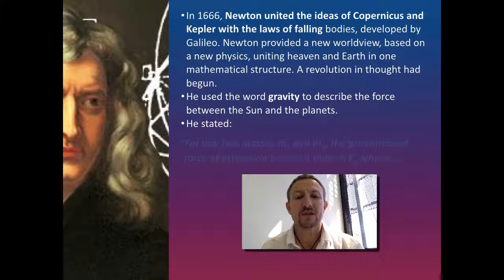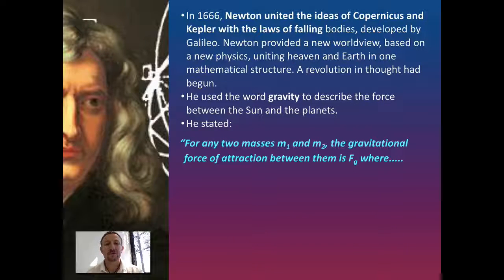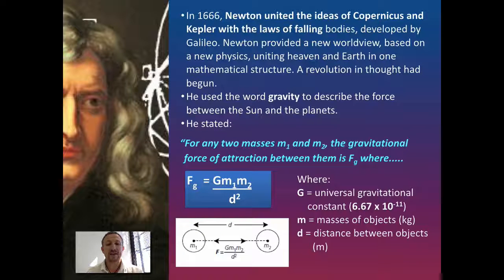So from this he produced this relationship that basically said for any two masses, m₁ and m₂, the gravitational force of attraction between them, Fg, will equal G, which is a gravitational constant, 6.67 × 10⁻¹¹, times the first mass, times the second mass,